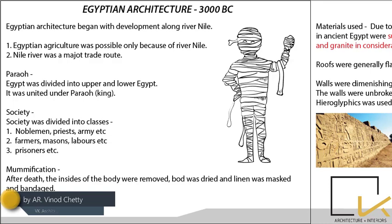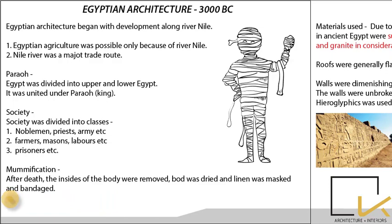In prehistoric architecture we saw the types of settlements used during the Stone Age, and the three stages of prehistoric architecture. Then we saw Near East architecture, which was around 3500 BC. Prehistoric was around 9000 BC and Near East is around 3500 BC. Now let's start with Egyptian architecture.